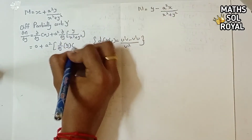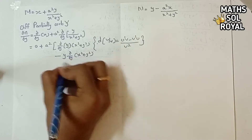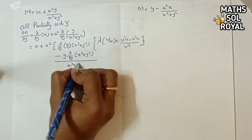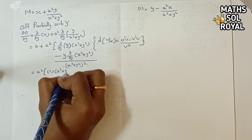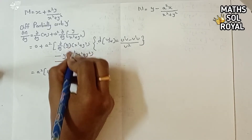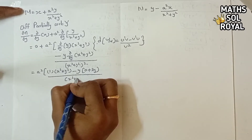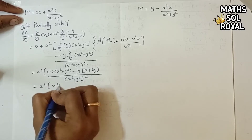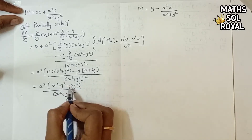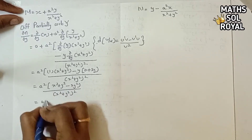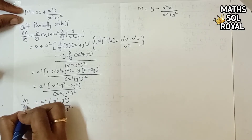Applying the quotient rule: ∂/∂y of [y/(x² + y²)] = [∂/∂y(y) · (x² + y²) - y · ∂/∂y(x² + y²)] / (x² + y²)². Since ∂/∂y(y) = 1 and ∂/∂y(x²) = 0 and ∂/∂y(y²) = 2y, this gives (x² + y² - 2y²) / (x² + y²)². Therefore ∂M/∂y = a²(x² - y²) / (x² + y²)².